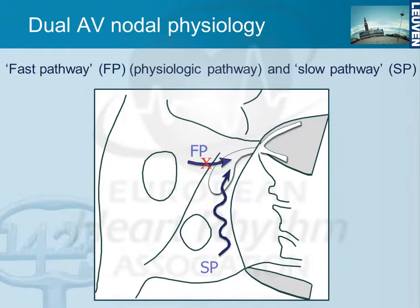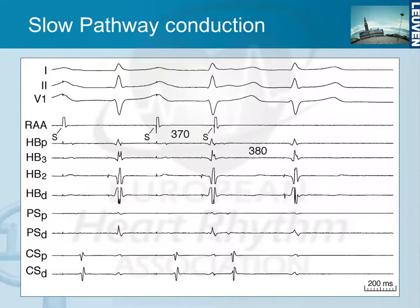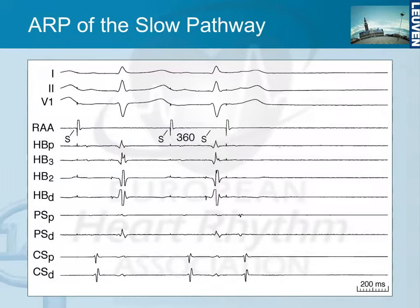The fast pathway blocks and we conduct slowly over the slow pathway. If we further decrement the coupling interval — here we already went down to 370 milliseconds — you have that gradual prolongation beat after beat of the AH interval, already reaching 380 milliseconds, clearly slow pathway conduction. Moving from 370 to 360, we have an extra stimulus which is captured with atrial electrograms but no conduction anymore — the refractory period of the slow pathway. We have defined the refractory period of the fast pathway at 560 milliseconds and the refractory period of the slow pathway at 360 milliseconds. That's normal evaluation of dual AV nodal conduction, at least antegradely.